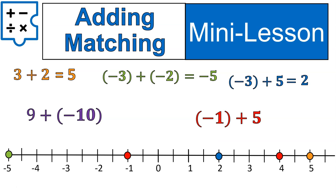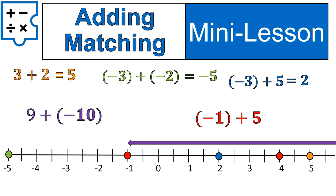Now we have 9 plus negative 10. That one's going to be a little bit tougher because 9 doesn't exist on this number line. So let's say I started at 9 and I added negative 10, or started at 9 and subtracted 10 — moved 10 to the left. I would end up there at negative 1. That one was a little tricky because it did start off of the screen.